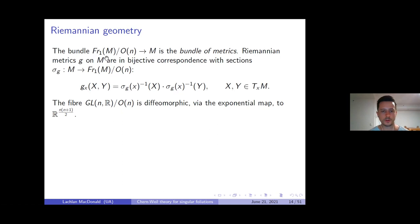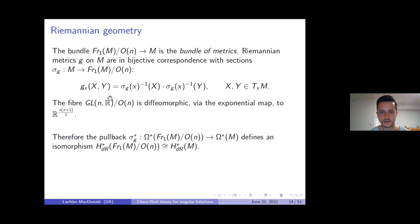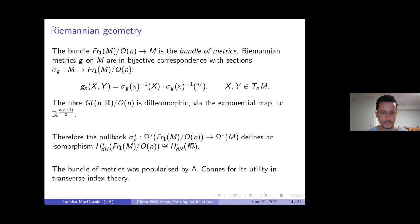One nice thing about this bundle is that its fibers — GL mod O — are globally symmetric Riemannian spaces of non-positive curvature, so all fibers are contractible. This means if we pull back any differential form on the bundle of metrics via a choice of metric — getting differential forms on the manifold — this pullback defines an isomorphism in de Rham cohomology. So as far as constructing characteristic forms, we're perfectly happy to land in differential forms on the bundle of metrics, since cohomologically it's isomorphic to M.